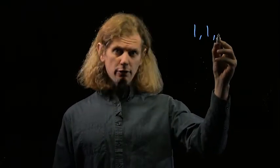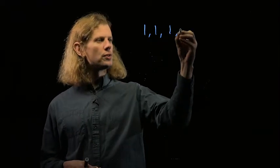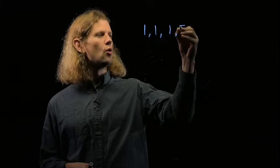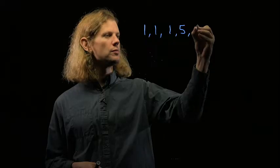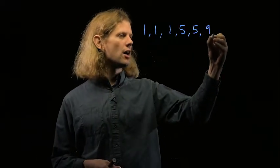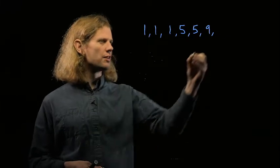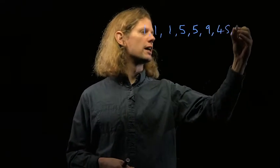The rules say that the odd terms of the sequence, like a_3, are formed by multiplying the previous two terms. So a_3 is 1 times 1, which is 1, while the even terms are formed by adding 4 to the previous term. So a_4 is 1 plus 4, which is 5. Next, we multiply the two previous terms: 1 times 5 is 5. We add 4 to get 9. We multiply 5 and 9 and get 45, and then we add 4 to get 49.